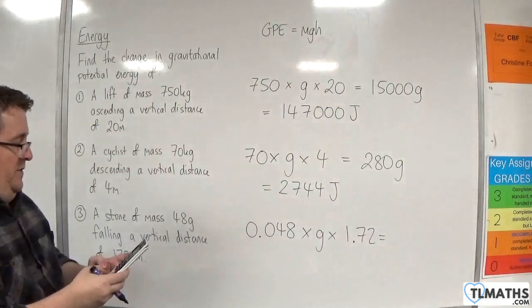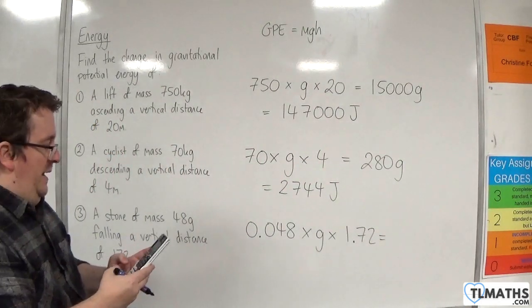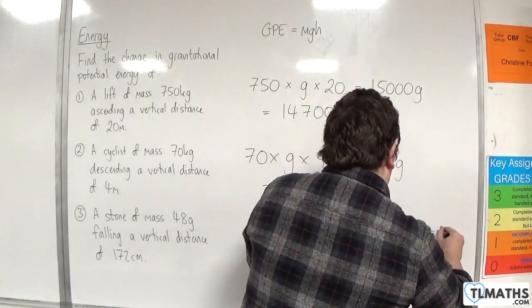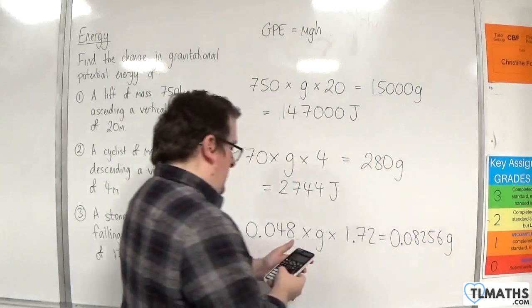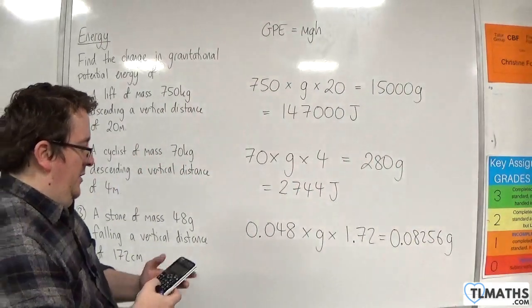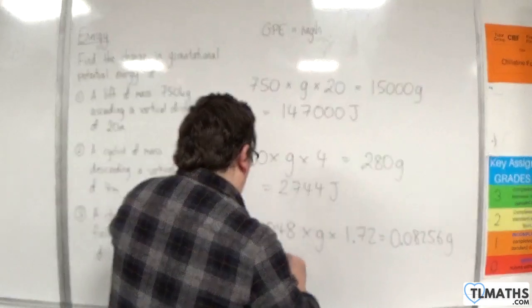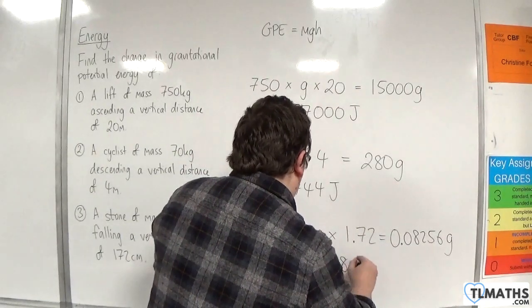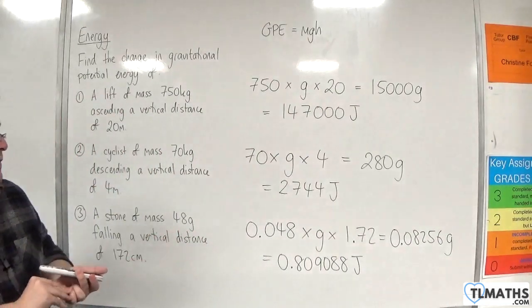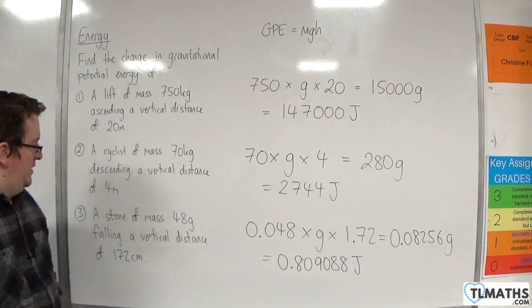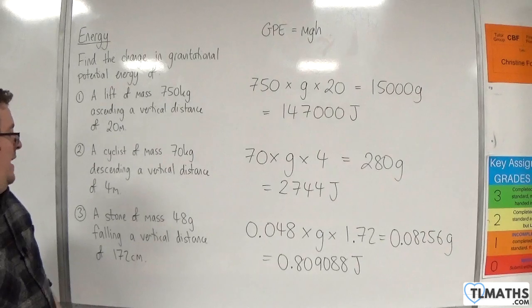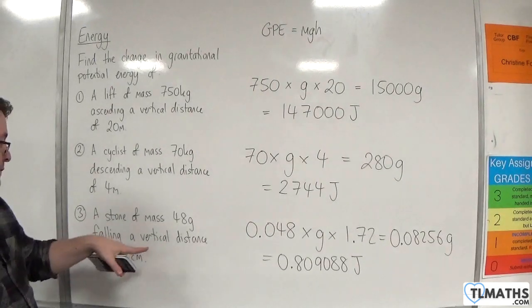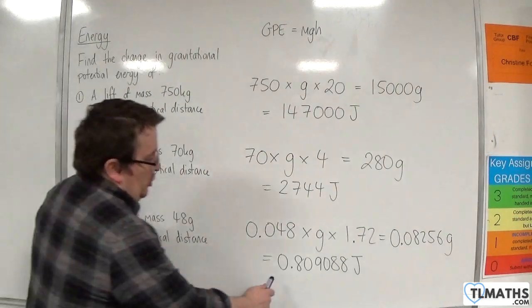So 1.72 times 0.048, so 0.08256 G, we're going to multiply that by 9.8, and we get 0.809088 joules. And of course, you could round that to three significant figures if you wanted to, but that would be a vertical distance. So it's falling that vertical distance, and so that is energy that is lost.